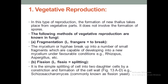The next type of vegetative reproduction is fission. In fission, simple splitting of a cell into two daughter cells occurs by constriction and formation of the cell wall. Such type of reproduction is commonly seen in yeast.